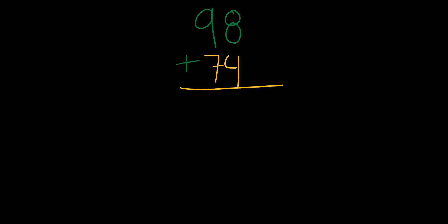In this example I have 98 plus 74. So the first thing I'm going to do is add 4 plus 8. 8 and 4 is going to be 12. So I'm going to put the 2 here and I'm going to carry the 1. So now we have to add 1 plus 9 which is 10. 10 plus 7 is going to be 17. And therefore our answer would be 172.